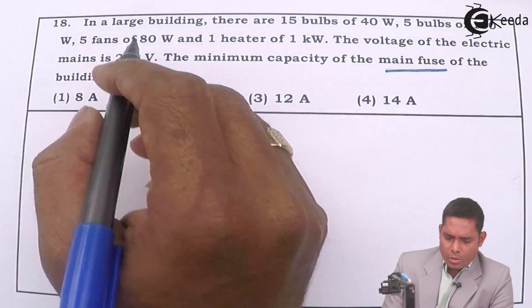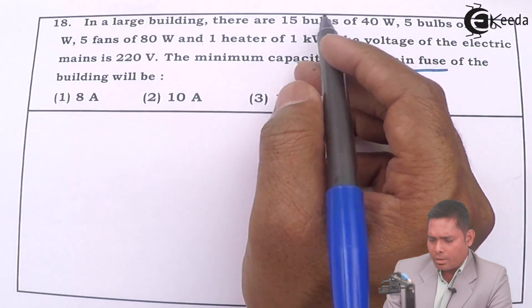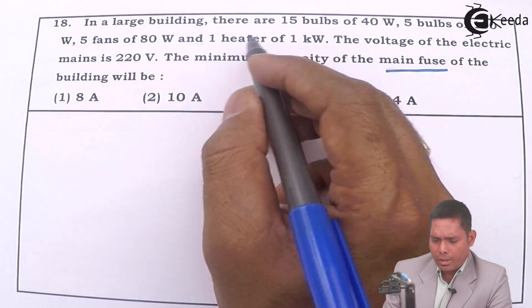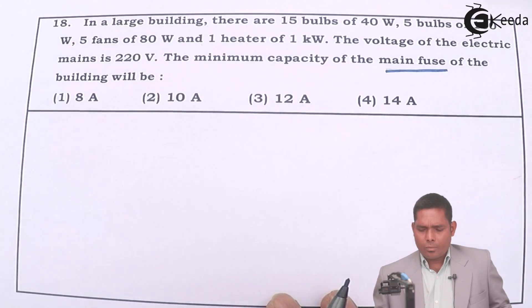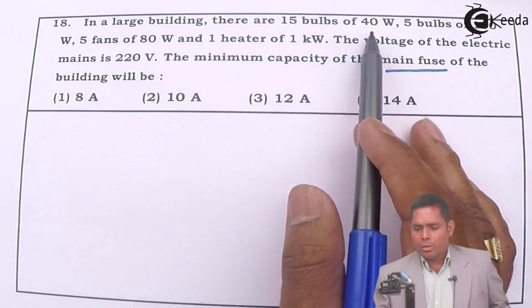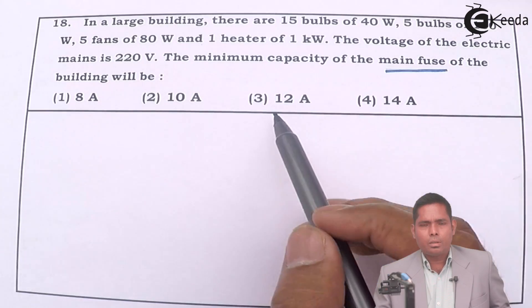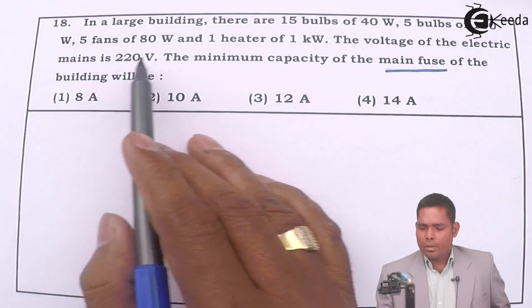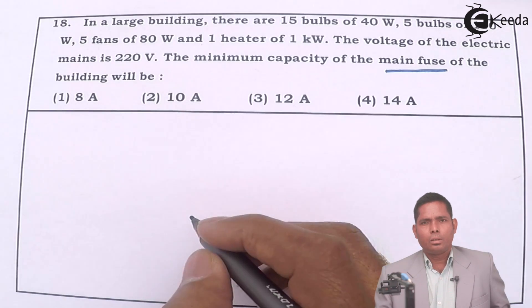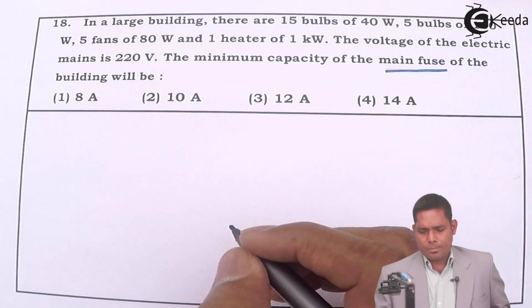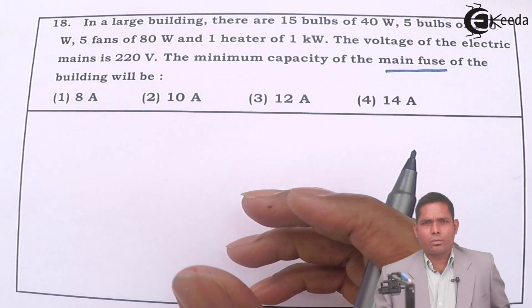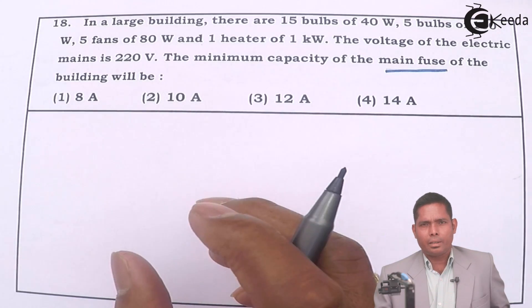So it is there to prevent any damage to the person and to protect us. The fuse is there and the main capacity you find. That means you have to actually find the current passing through the fuse. You have got 15 bulbs, so you have to find the current drawn by each of these elements connected. And we know that in a building, the connections are parallel connections. In parallel connections of resistance, the powers are added.